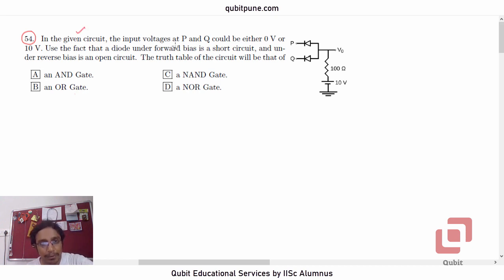In the given circuit, the input voltages at P and Q could either be 0V or 10V. So these are our inputs P and Q. Use the fact that a diode under forward bias is a short circuit and under reverse bias is an open circuit. The truth table of the circuit will be that of an AND gate, an OR gate, or a NOR gate. So here is our circuit, which has two diodes. P and Q are the inputs. There is a battery of 10V situated here and a resistor of resistance 100 ohm. And this is the output V0.